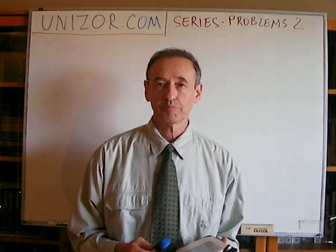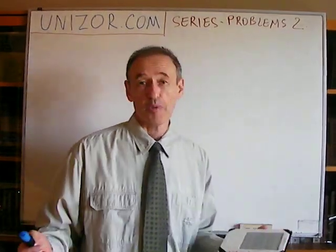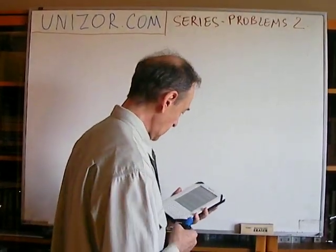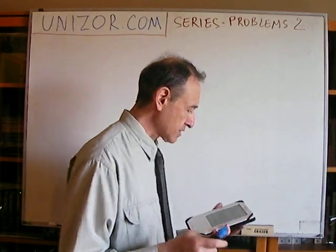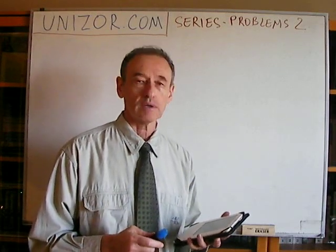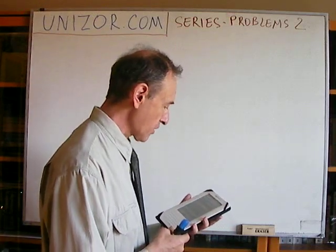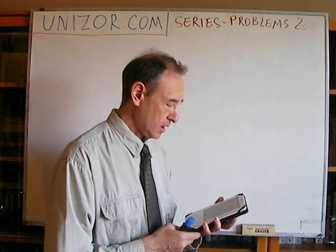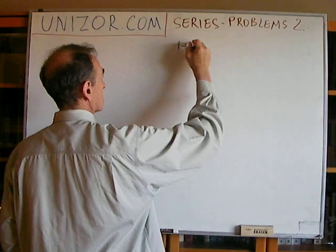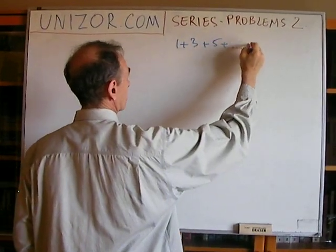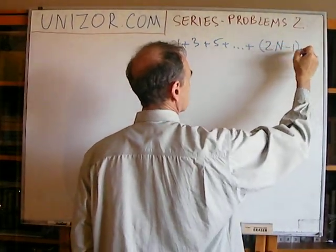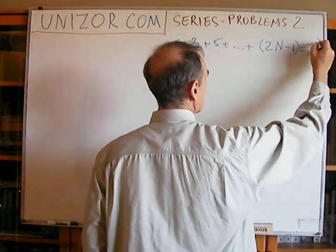That might be actually challenging for some of you, which is the purpose of this course anyway — to challenge your mind. Starting from the beginning: the first is a relatively easy problem, which I have already mentioned in one of my theoretical lectures. If you sum the first n odd numbers, you will get n squared. So 1 plus 3 plus 5 plus... plus the nth odd number, which is 2n minus 1.